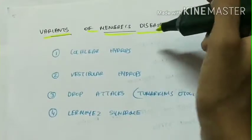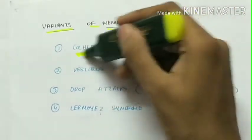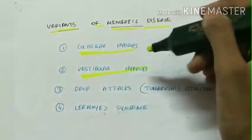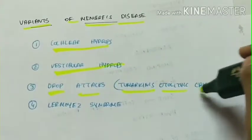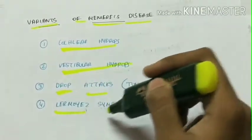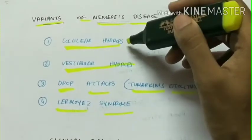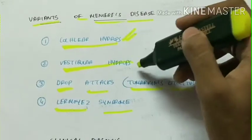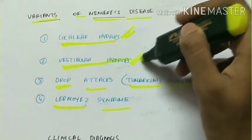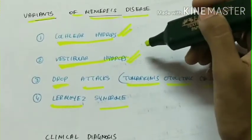Variants of Meniere's disease: there are four variants. Cochlear hydrops, vestibular hydrops, drop attacks also called as Tumarkin's otolith crisis, and Lermoyez syndrome. In cochlear hydrops there are only cochlear symptoms but no vestibular symptoms. In vestibular hydrops only vestibular symptoms are seen but not cochlear symptoms.